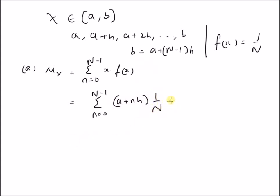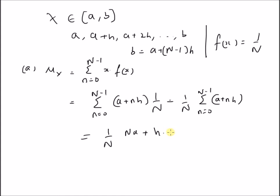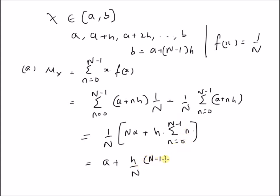This is equal to 1 by N, summation from n equal to 0 to n minus 1 of a plus n into h. The value a is independent of n, so the first sum becomes n into a. For the second term, h is a constant and the summation from n equal to 0 to n minus 1 of n is the sum of the first n minus 1 natural numbers, which is equal to n minus 1 into n by 2. So this is equal to a plus h into n minus 1 divided by 2.